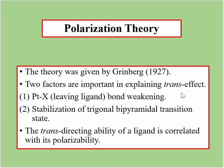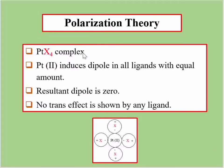Now the trans-directing ability of a ligand is considered with its polarizability. In polarization theory, the trans-directing ability of a ligand correlates with its polarizability. We will explain this theory with two examples. The first complex is PtX4, where all four ligands are X.